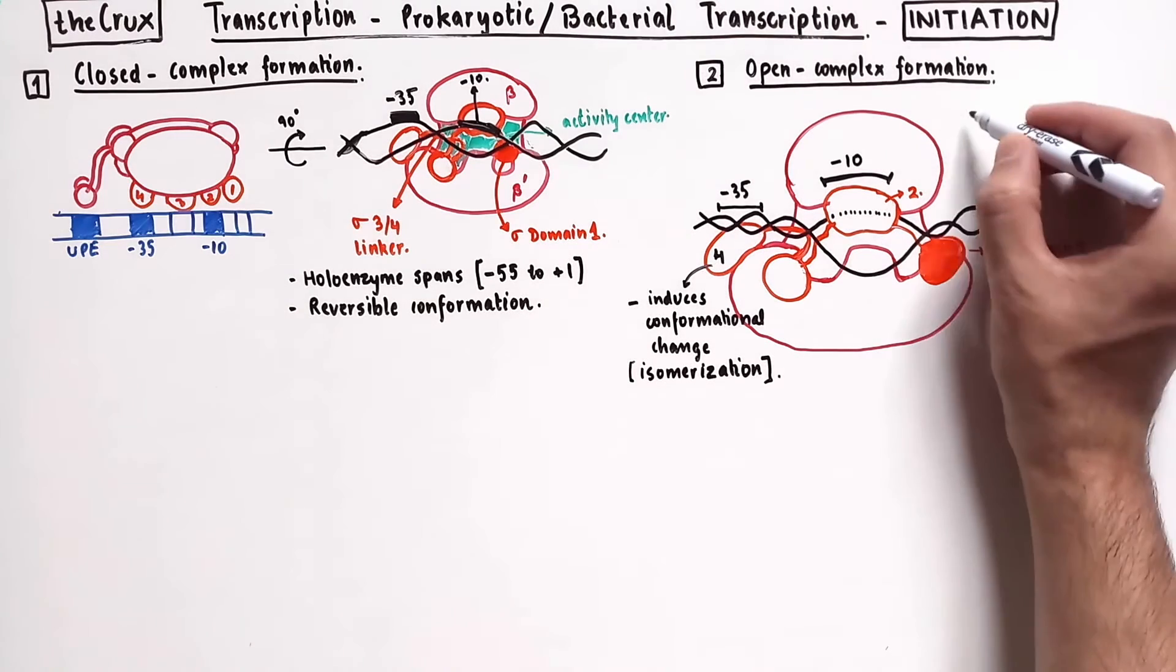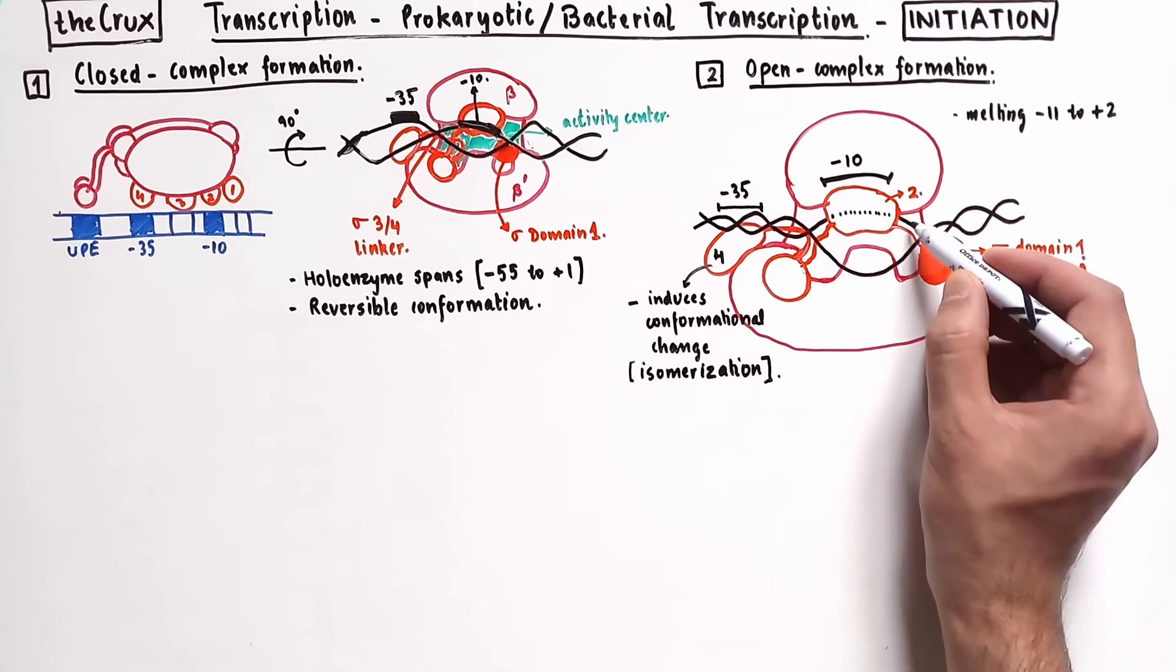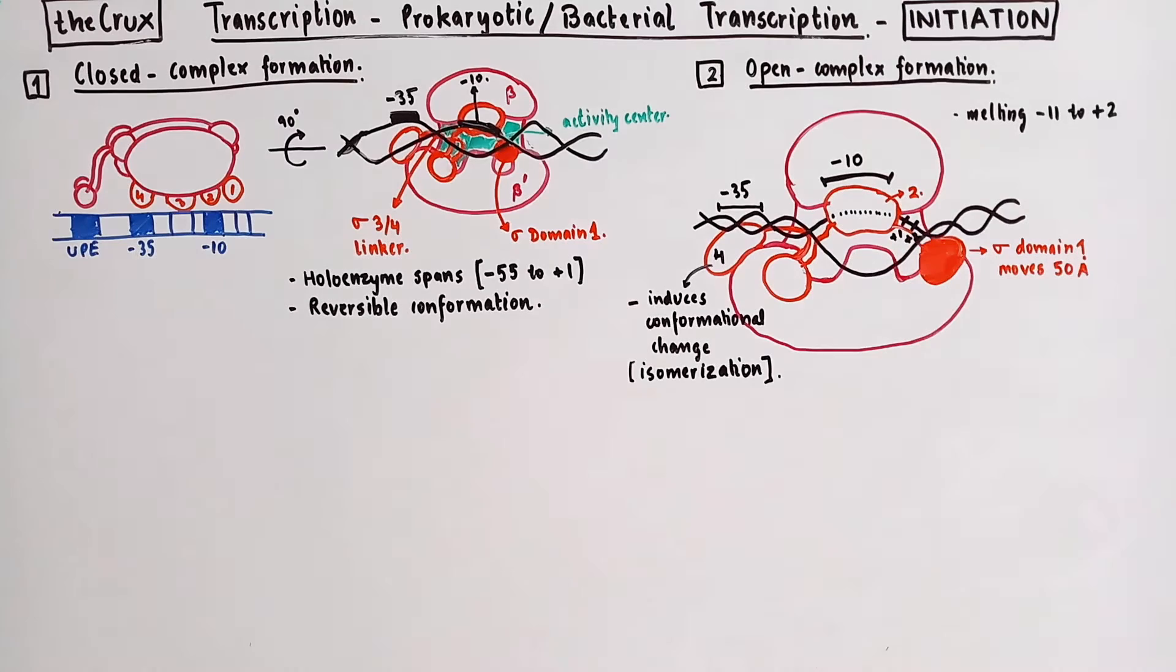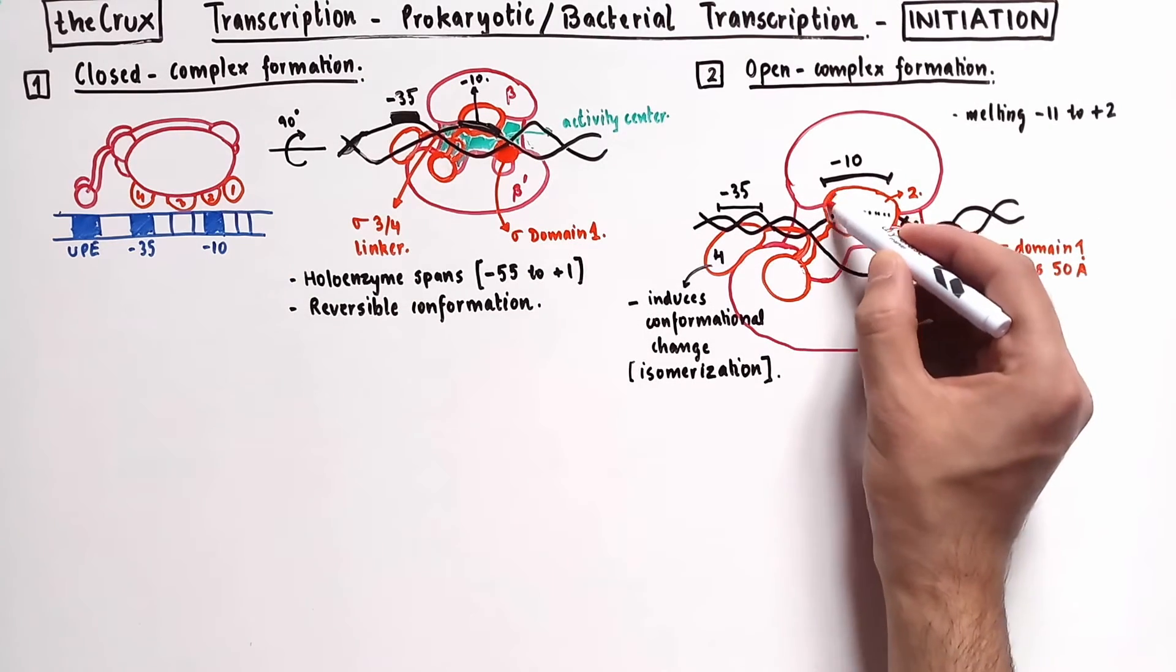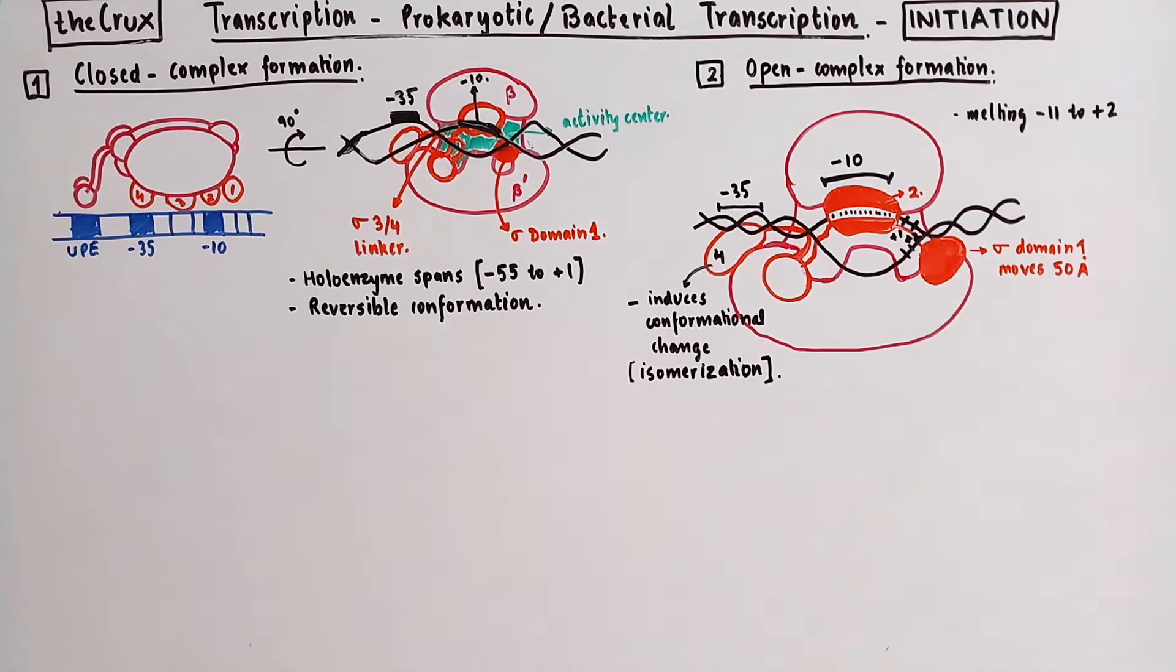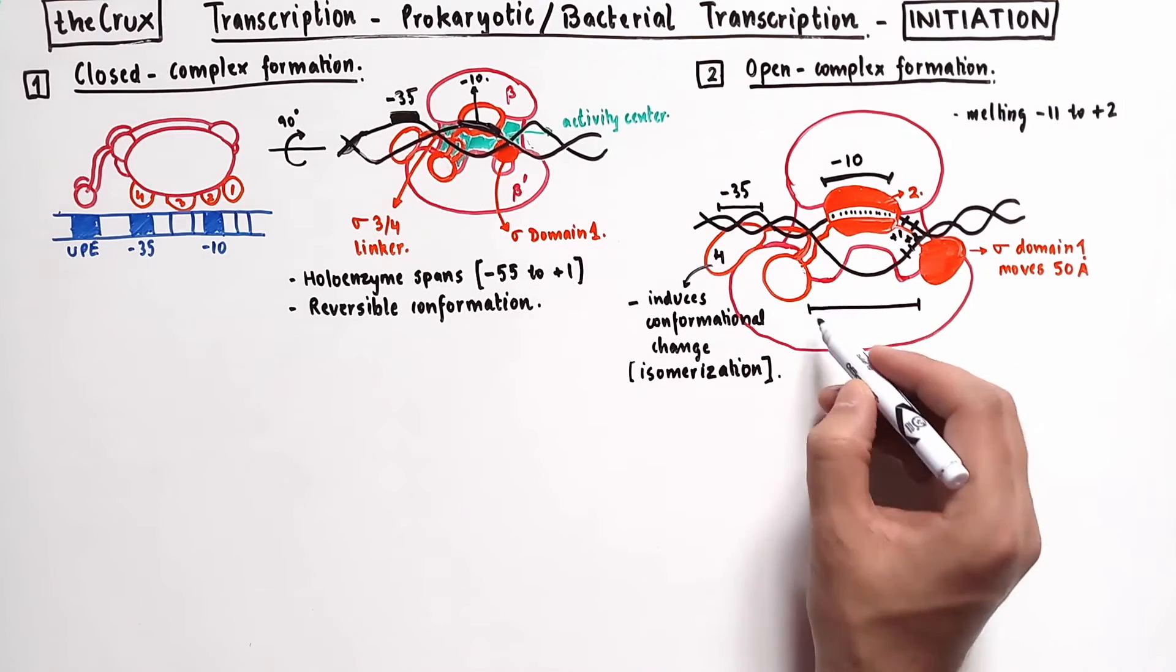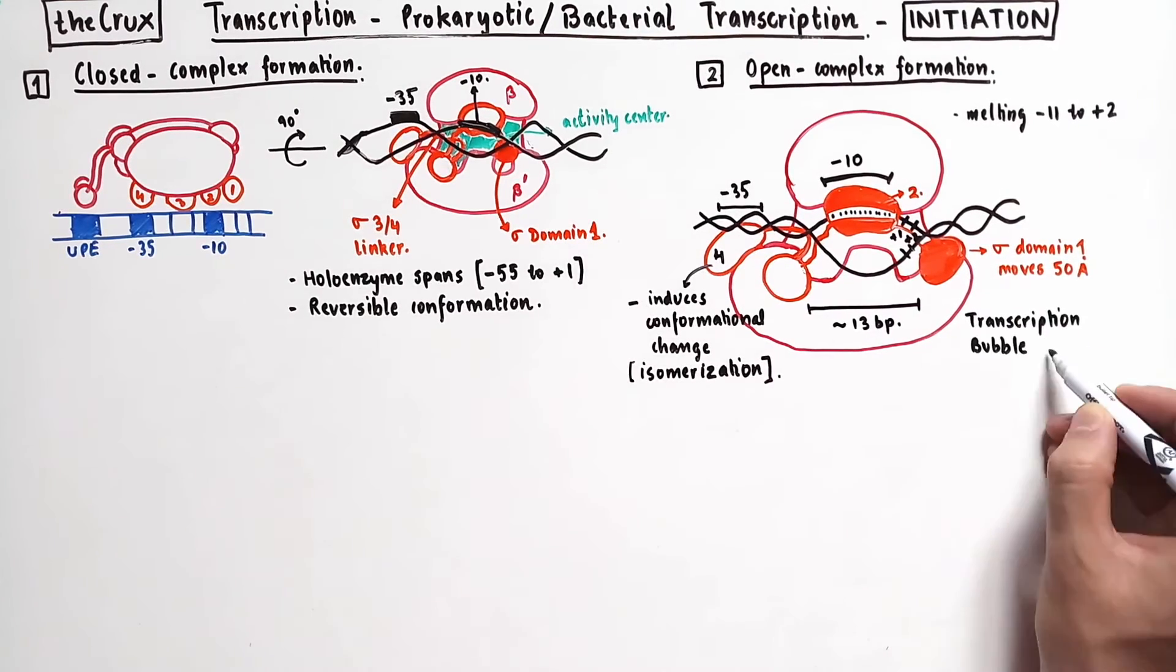The melting occurs in a span of 13 bases, from position negative 12 to about plus 2. So the melting process actually includes the TSS. Notice the dotted representation of DNA strands. This means that the strand is actually behind the domain 2. This 13 base pairs of melted DNA is usually known as the transcription bubble.